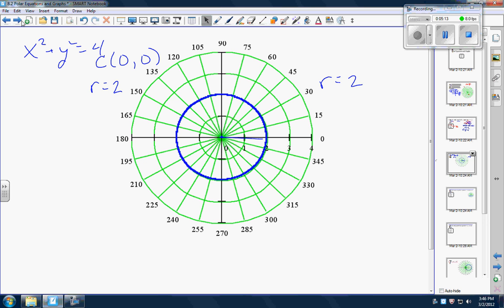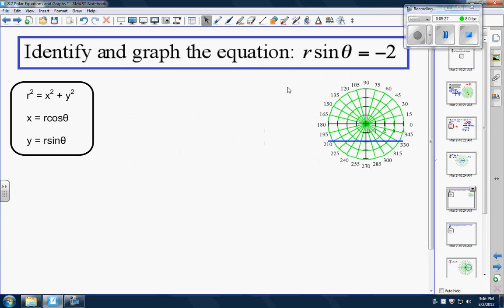So that graph there was just modeled by the polar equation r equals two. So we use r's in rectangular but those are radiuses. Okay so I know we say r over two here. That's our radius. This is the equation we're graphing with it.